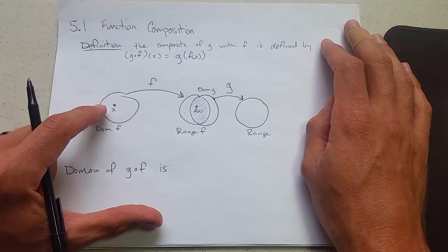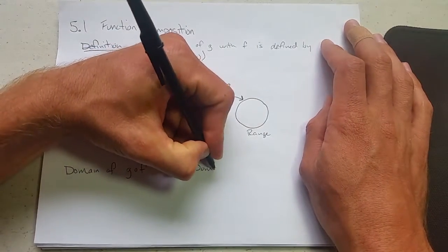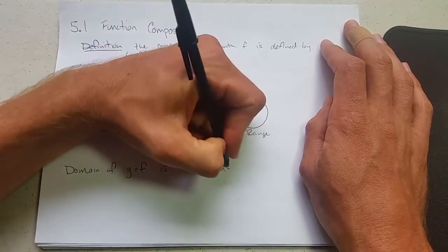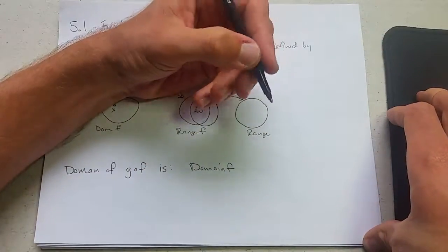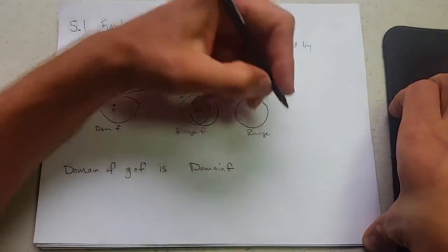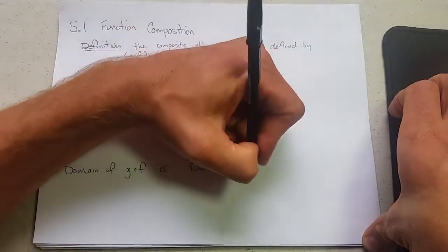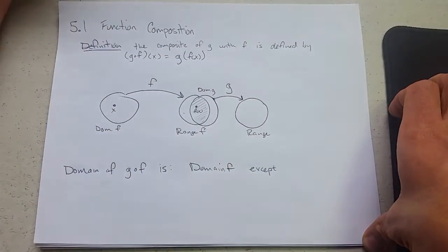So the domain of g of f is the domain of f. So the domain of f and if we write in set notation, I would write intersection. But what I'm going to do instead is write except, it's a little easier way to understand this, except